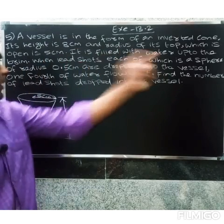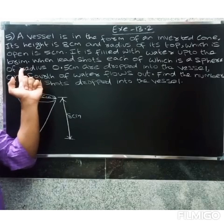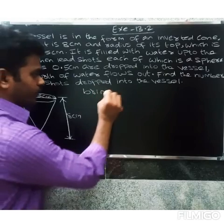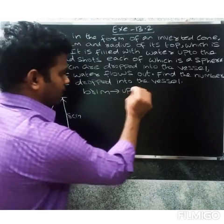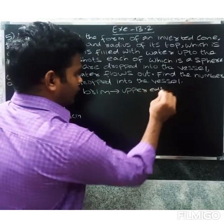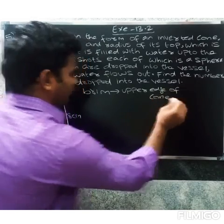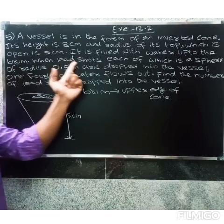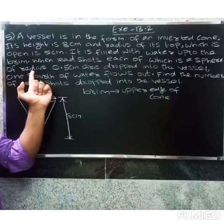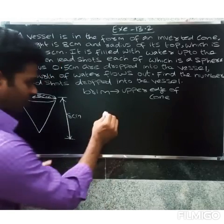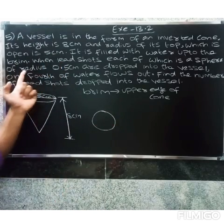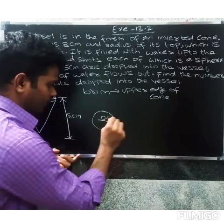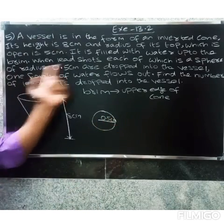It is filled with water up to the brim — the brim meaning the upper edge of the cone, filled totally to the upper edge. When lead shots, each being a sphere of radius 0.5 centimeters, are dropped into the vessel.